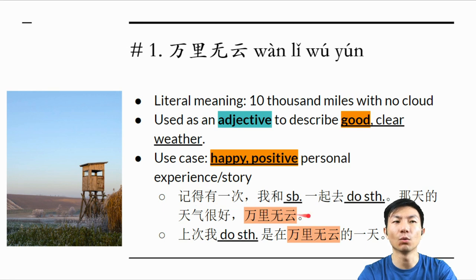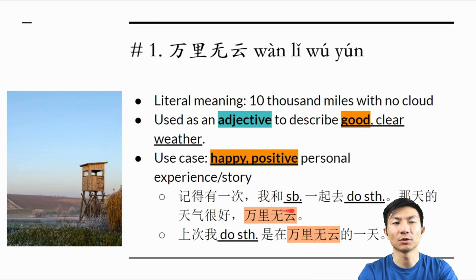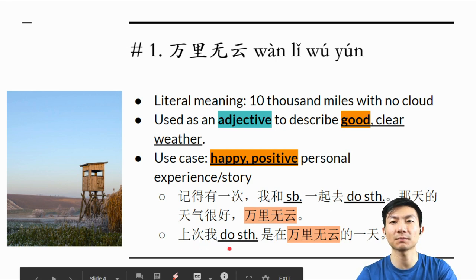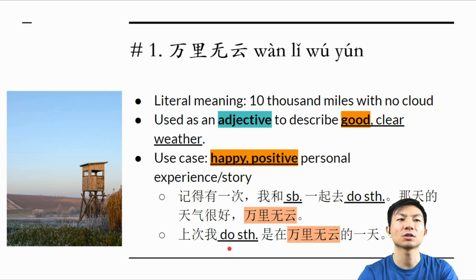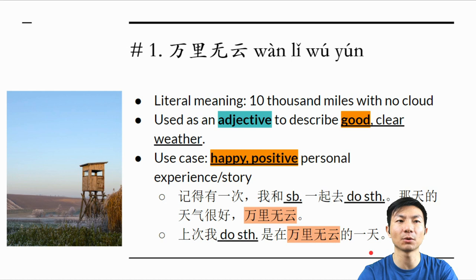记得有一次我和 somebody 一起去 do something. 那天的天气很好。万里乌云. You can use that to start your story. Second example: 上次我做 something 的时候，是在万里乌云的一天. You can use either one — whichever you feel more comfortable with.